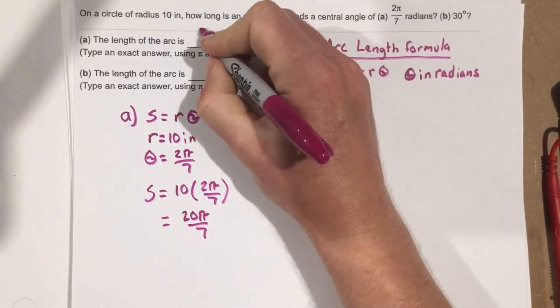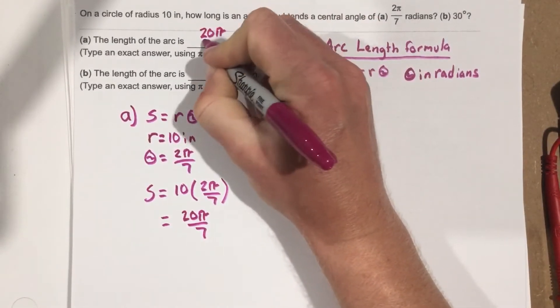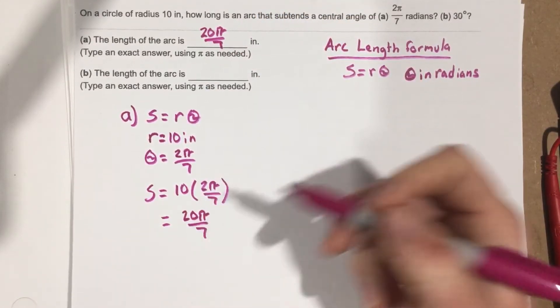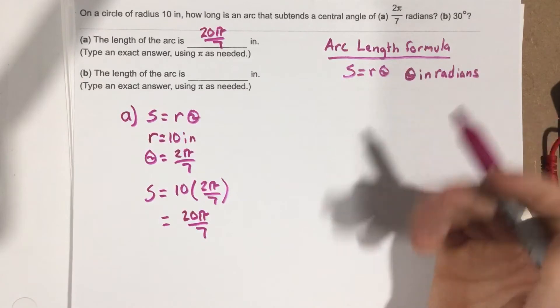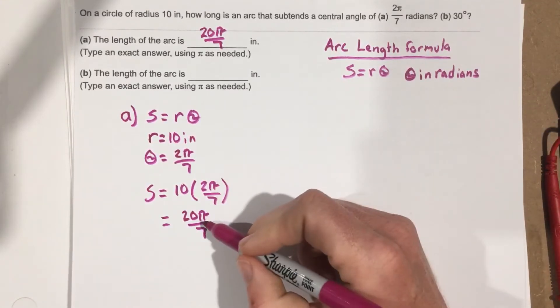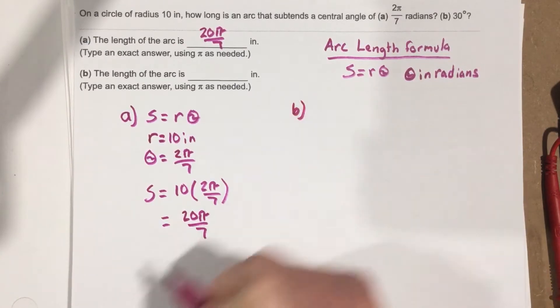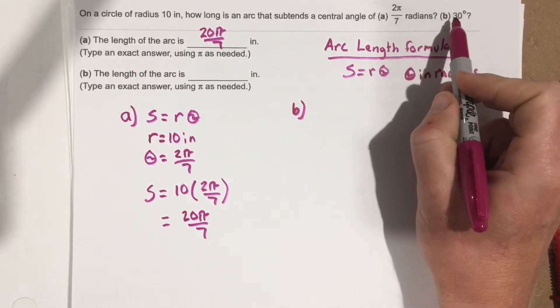So then, for part, this is 20π over 7, that's our arc length. Obviously, 20 times 3 divided by 7 will give you the actual arc length in inches. But part B, now they're going to have us use 30 degrees.